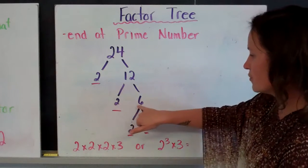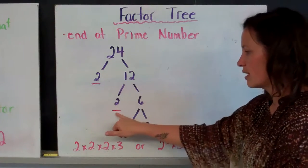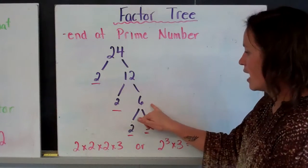But 12, there are more factors that make up 12. So I keep going. So 2 times 6 gets me 12. So I put my 2 and my 6 here. 2 again is a prime number. I can stop there. However, my 6, there are more factors.